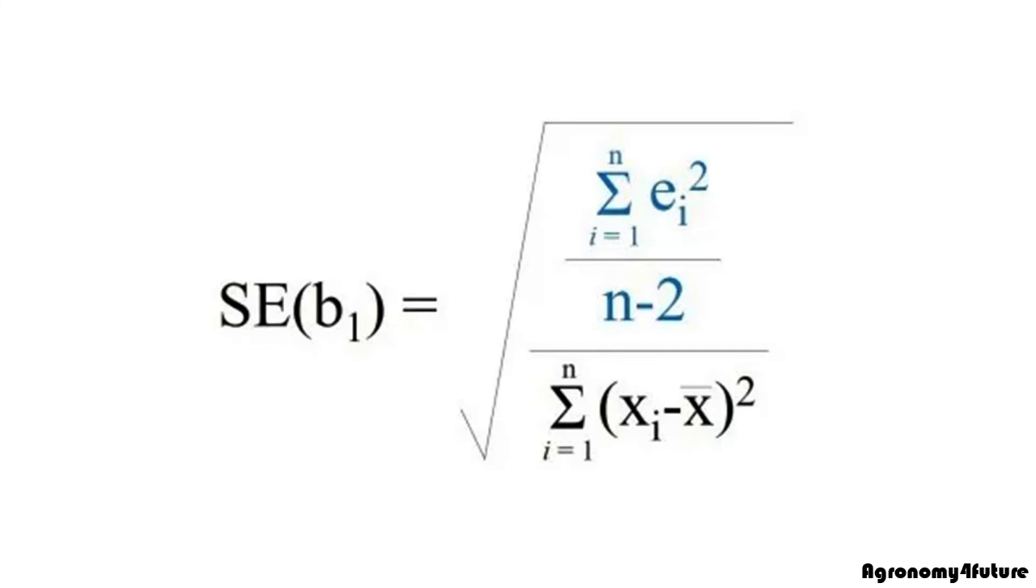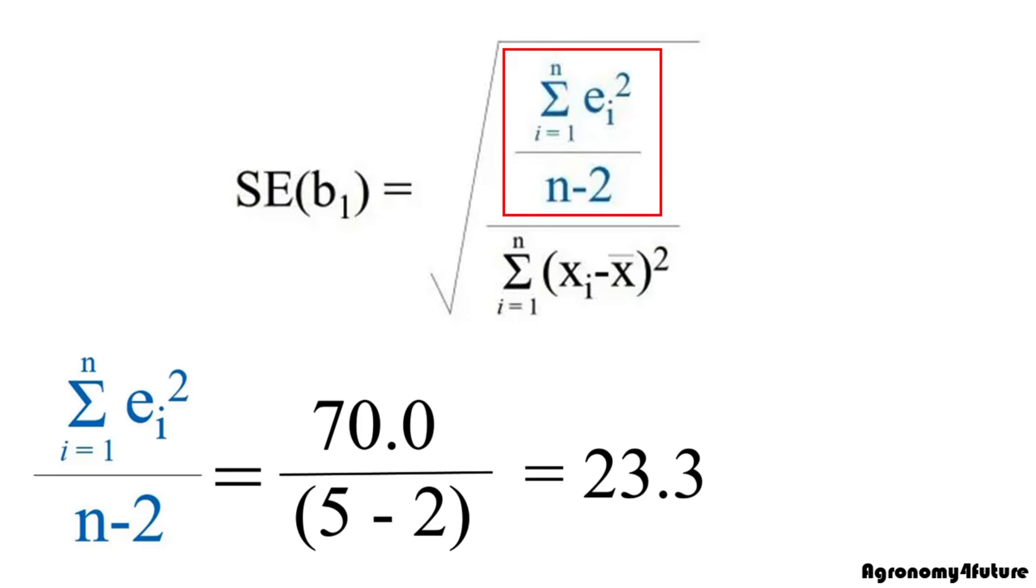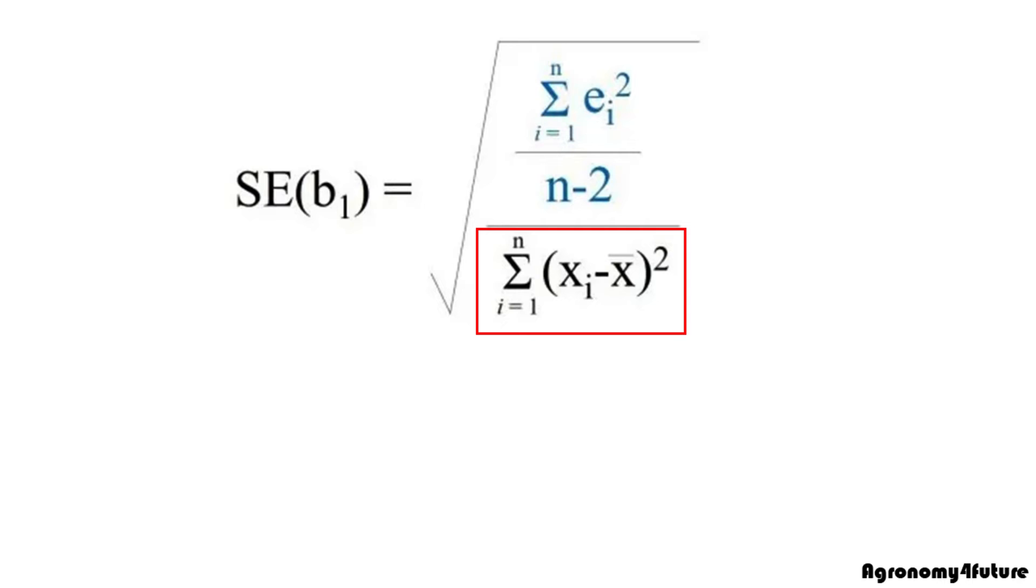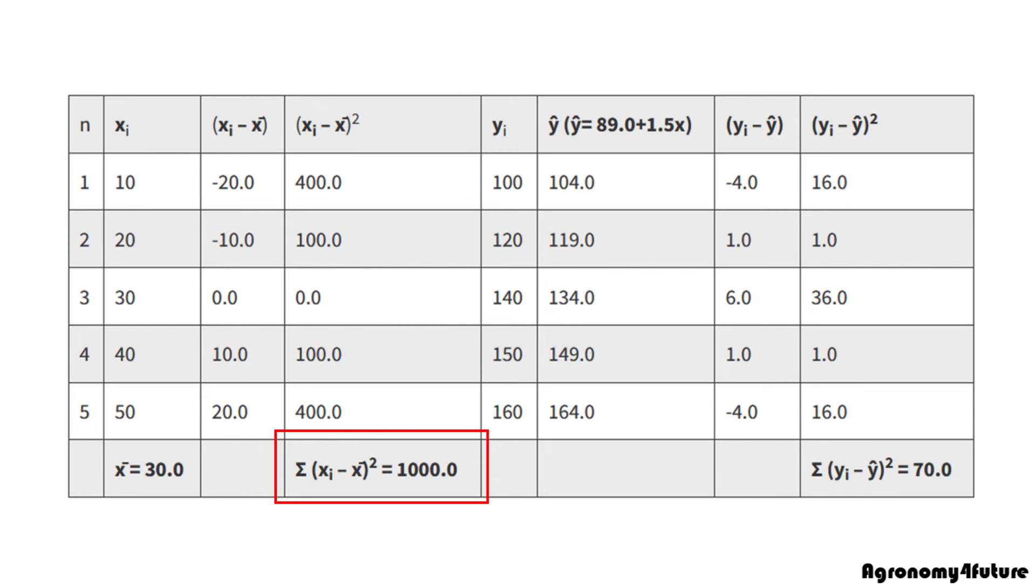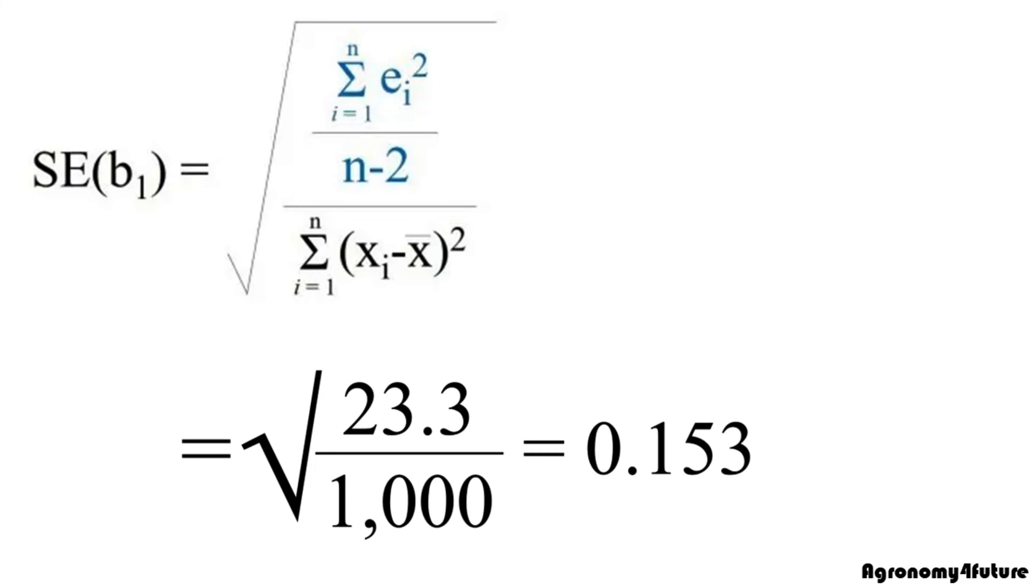Now, let's calculate standard error of slope. We already know variance of error, which is 23.3. Also, we already calculated sum of squared of x. Please see the table again. Then, standard error of slope will be square root of 23.3 divided by 1000.